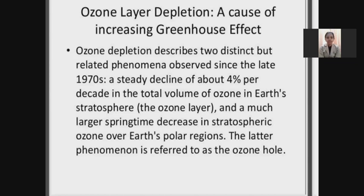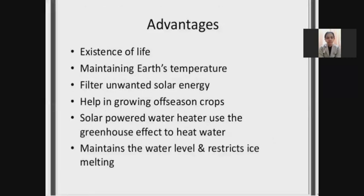One of the main effects of the greenhouse effect is ozone layer depletion. Ozone layer depletion describes two distinct but related phenomena observed since the late 1970s: a steady decline of about 4% per decade in the total volume of ozone in earth's stratosphere, and a much larger springtime decrease in stratospheric ozone over earth's polar regions. The latter phenomenon is referred to as the ozone hole. The greenhouse effect is one of the reasons behind ozone layer depletion.